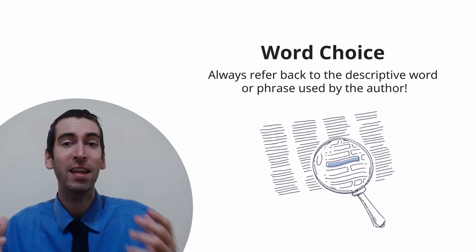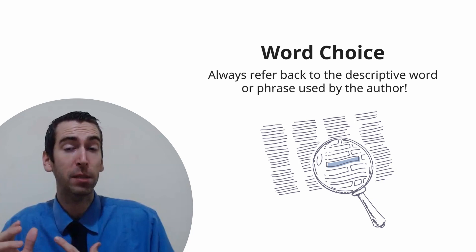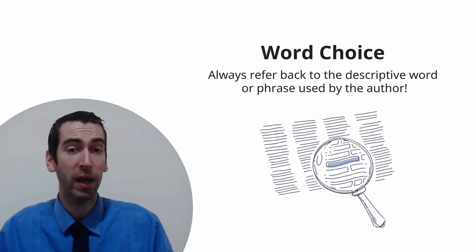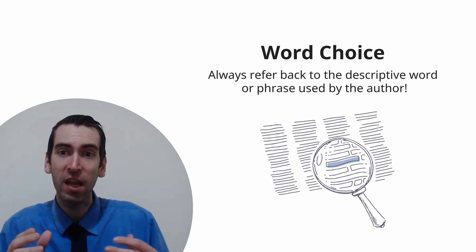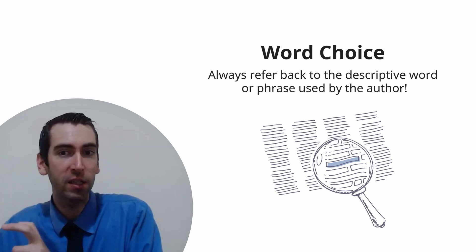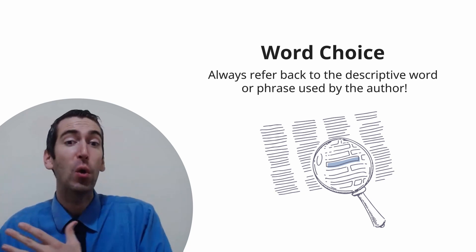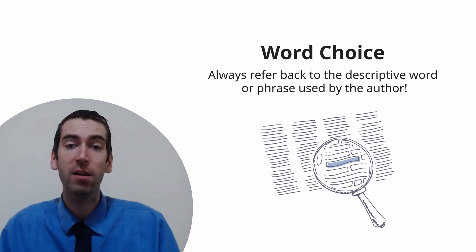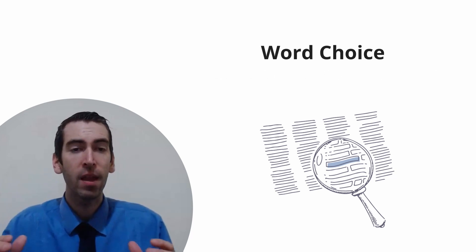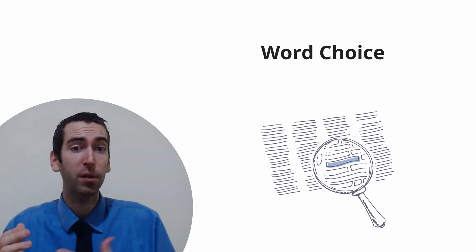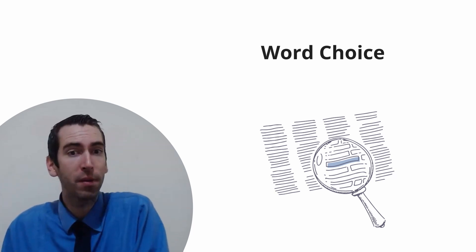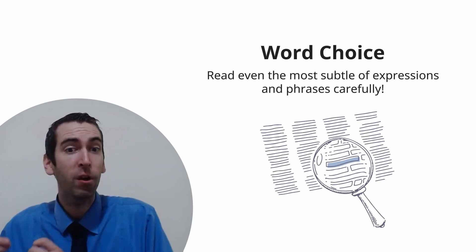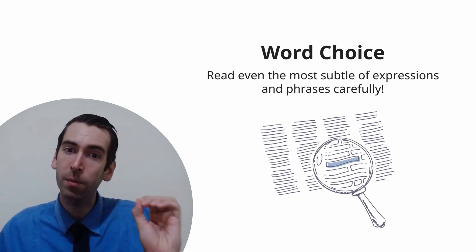Word choice alone can indicate an author's intentions. When you review your wrong answers, you might find that a seemingly obscure description of a person or thing was necessary to answer a question correctly. Did an author describe an individual's actions as full of guile? Does a person associate with charlatans? Were someone's actions rueful? When students don't understand why they got a CARS question wrong, it's usually because they failed to refer back to a descriptive word or phrase the author used. Read everything on your CARS section as if it were written for a reason — for a defined purpose, to communicate an idea, even with the most subtle of expressions.